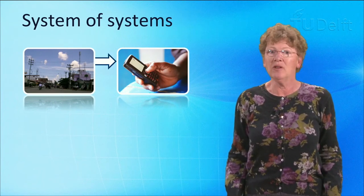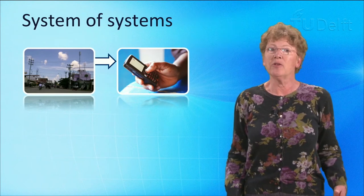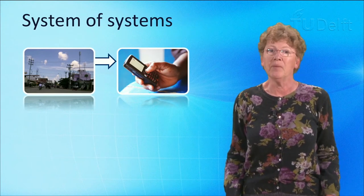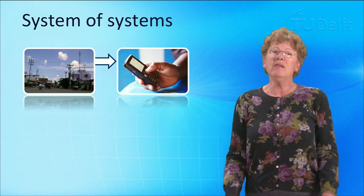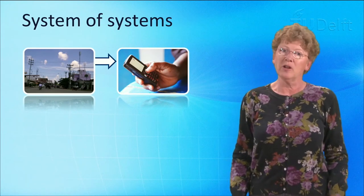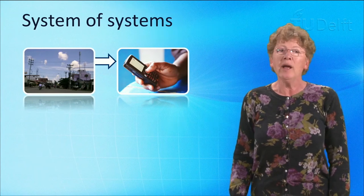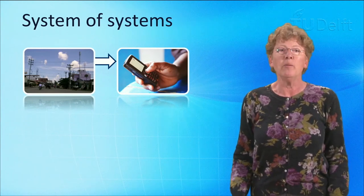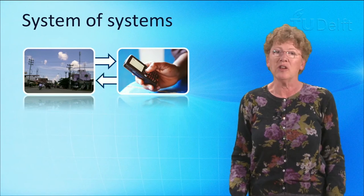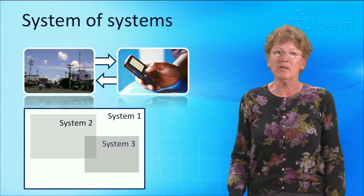Without telecommunications, the electricity infrastructure itself will stop functioning properly. The interdependencies and interactions between different infrastructures explain why it is so difficult to restore basic services after natural disasters, such as hurricanes, floods, and earthquakes.